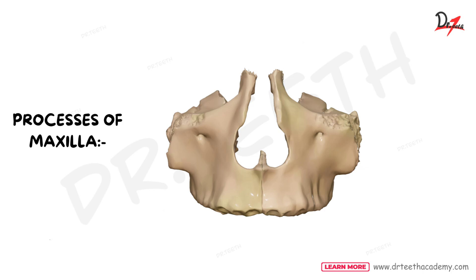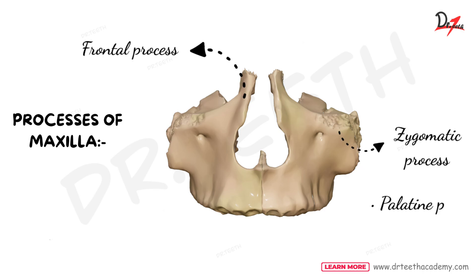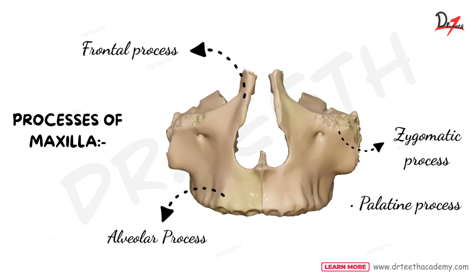Moving to the four processes of maxilla. We have frontal process, zygomatic process, palatine process and alveolar process. The alveolar process forms the maxillary dental arch containing eight cavities where the upper teeth are held. The frontal process has a vertical ridge which constitutes the medial border of the orbit. The zygomatic process of the maxilla grows laterally and meets the zygomatic bone. The palatine process is a horizontal extension on the medial side of the bone, constituting the roof of the mouth and the floor of the nasal cavity.